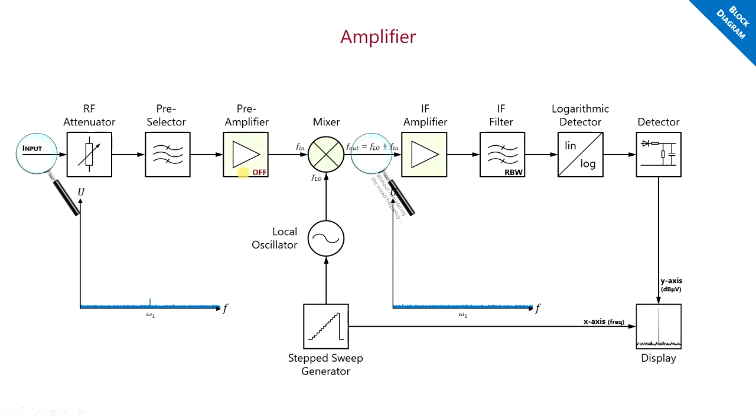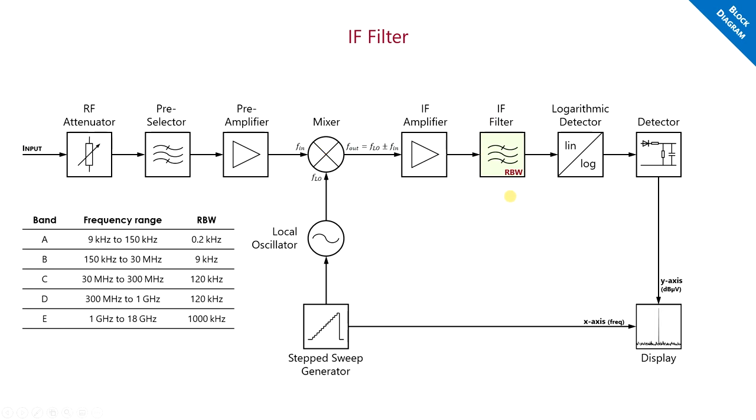In our block diagram, we can find amplifiers as well. Every non-ideal filter, but also our frequency mixer, reduces the signal strength. Therefore, we need to amplify our signal to prevent a loss of resolution in the y-axis.